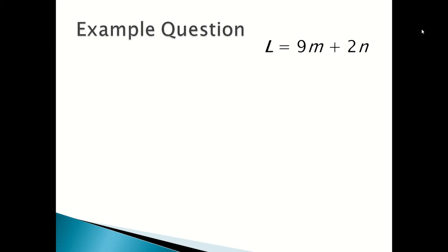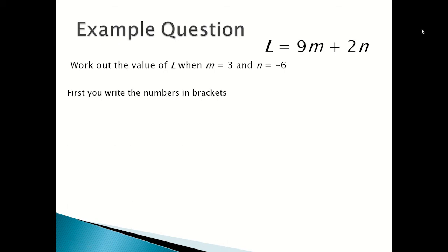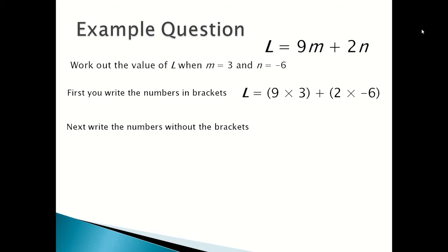Example question: here's your formula — l equals 9m plus 2n. Work out the value of l when m is equal to 3 and n is equal to minus 6. First, you write the numbers into brackets, so it becomes l equals 9 times 3 plus 2 times minus 6. Next, you expand the brackets and write the numbers without them.